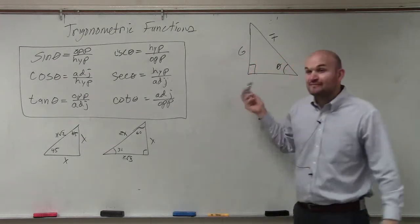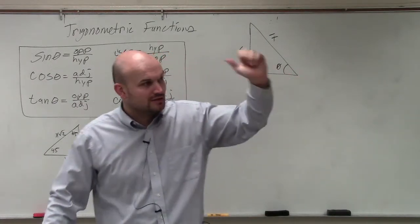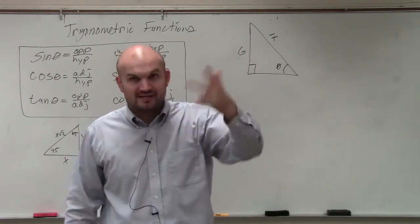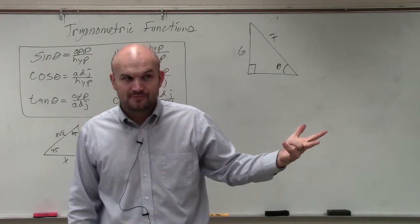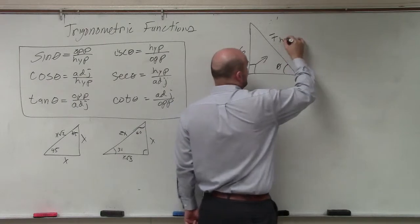So what we have to do, though, is you guys notice the six trigonometric functions deal with three sides of a triangle: hypotenuse, opposite, and adjacent. Correct? Yes? So if you guys look at this, first thing we do, again, is find the hypotenuse.